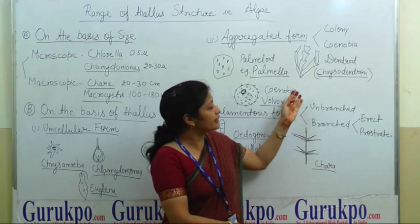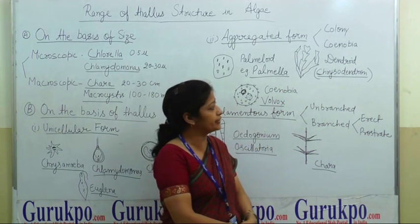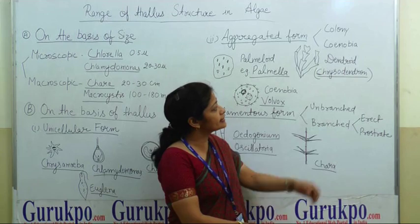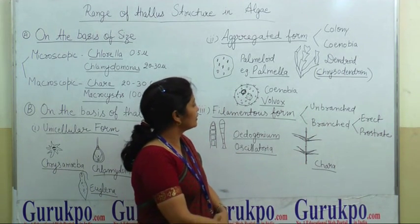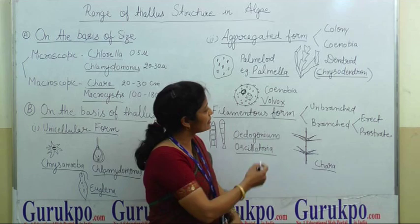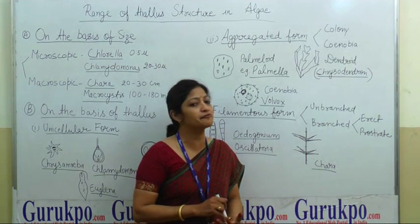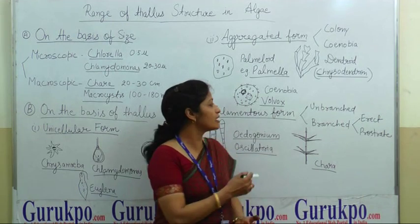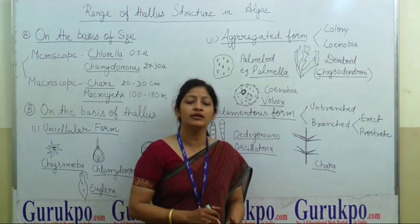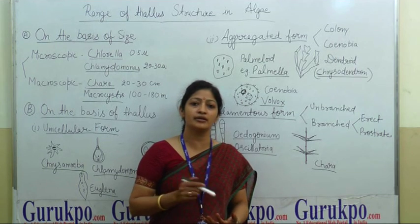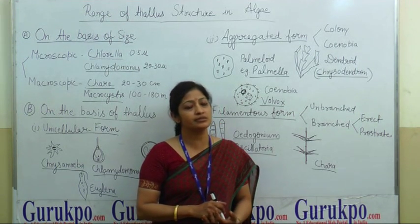If the cells are arranged in a tree-like habit, this habit is called dendroid, and the example is Chrysodendron. Another example is a coenobium, where the number of cells are fixed in the colony. For example, in Volvox, the number of cells ranges between 500 to 60,000.